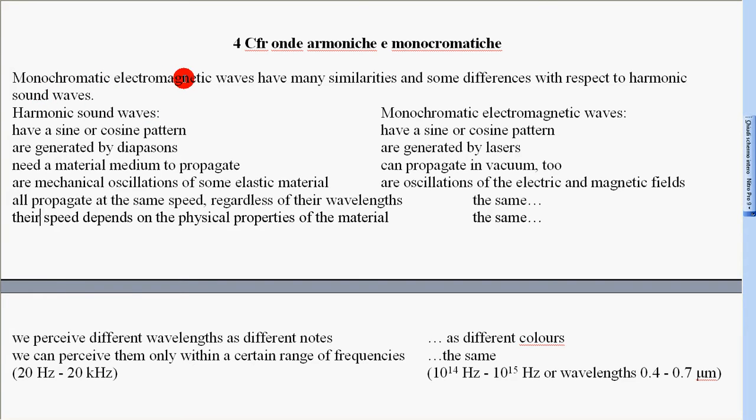Monochromatic electromagnetic waves have many similarities and some differences with respect to harmonic sound waves. Harmonic sound waves have a sine or a cosine pattern. Monochromatic electromagnetic waves have a sine or a cosine pattern.